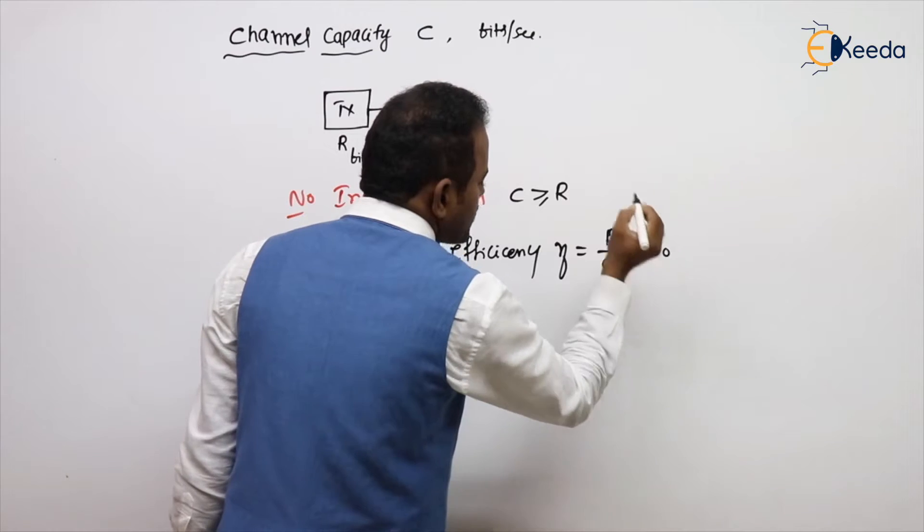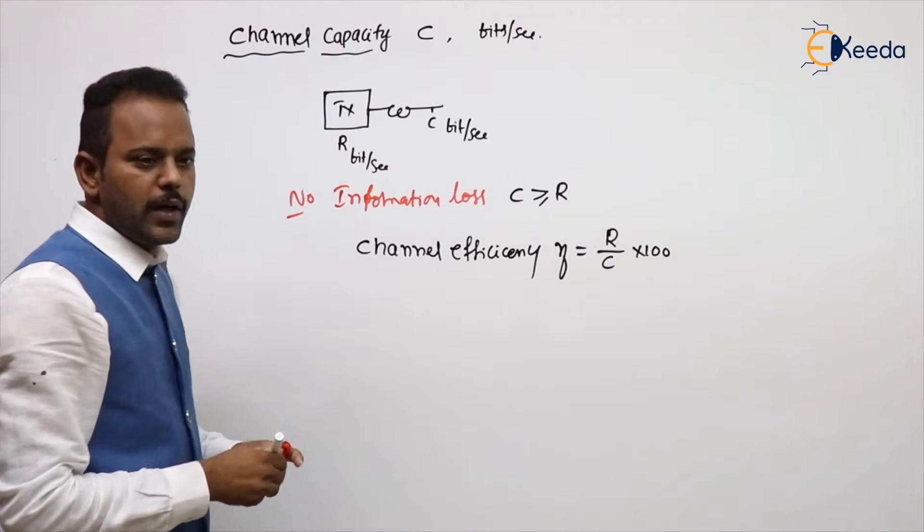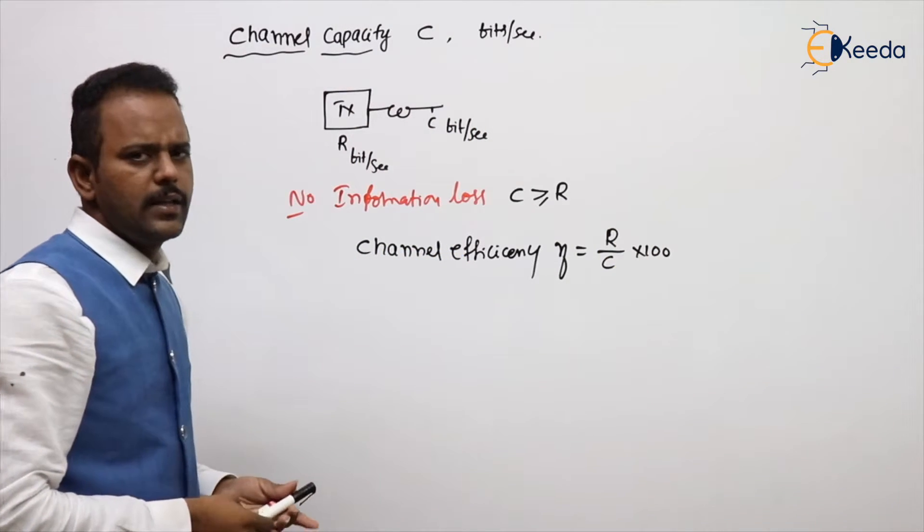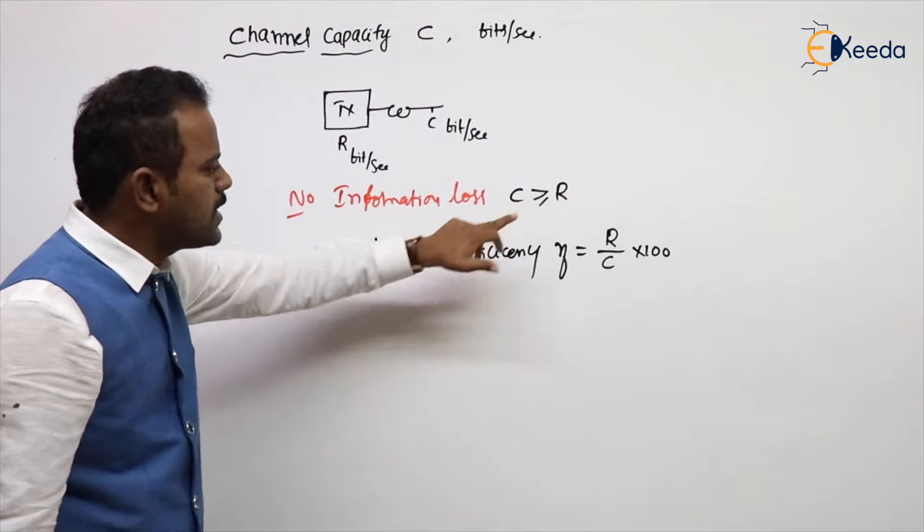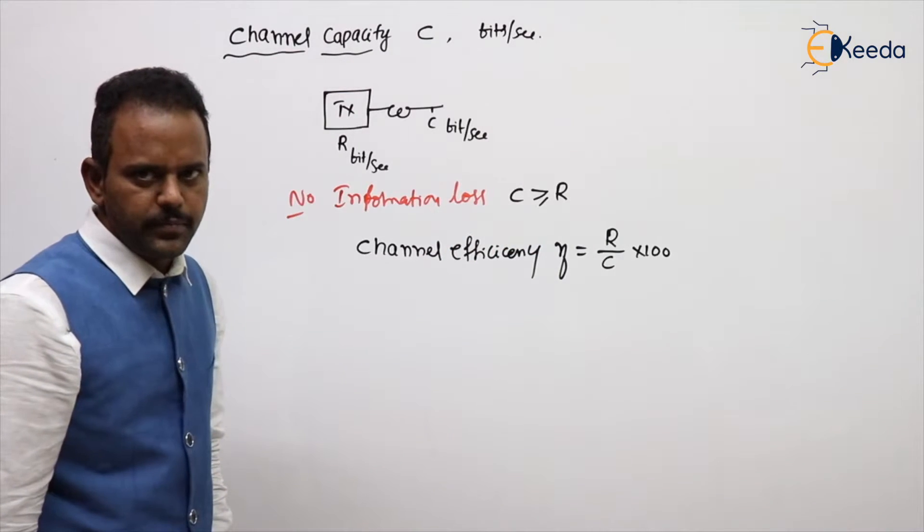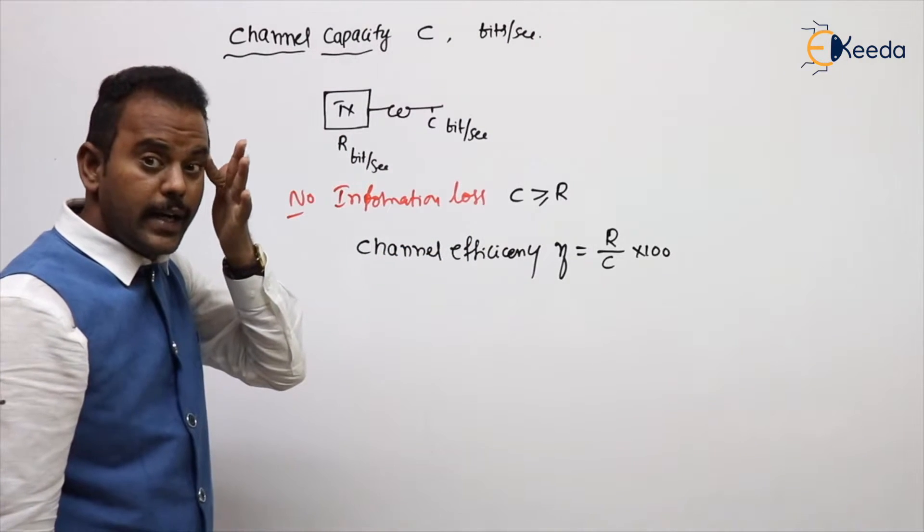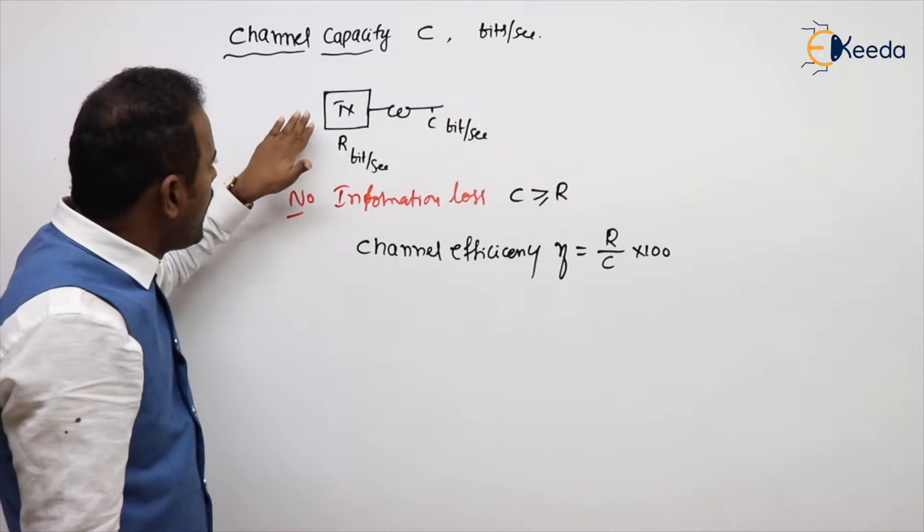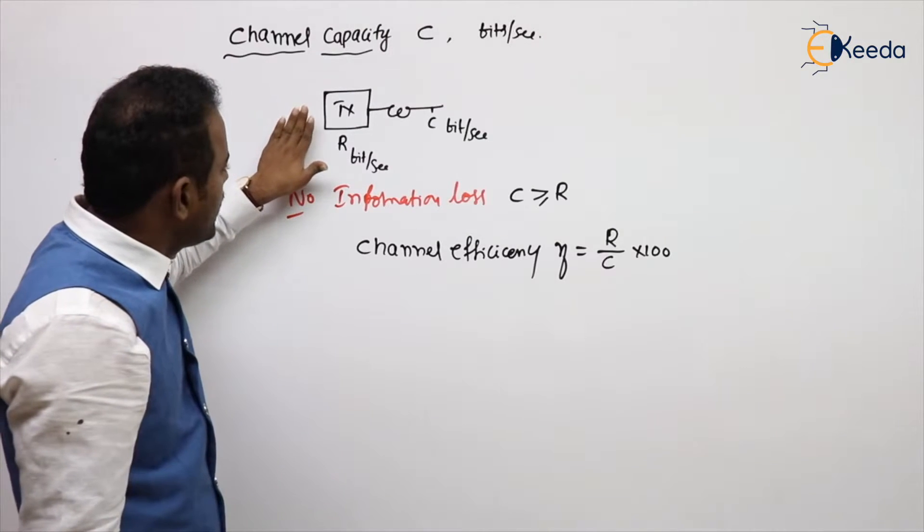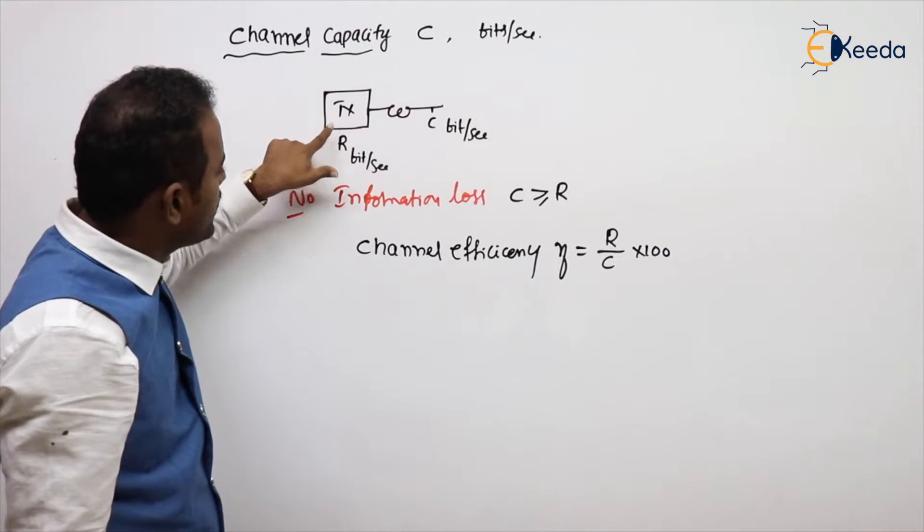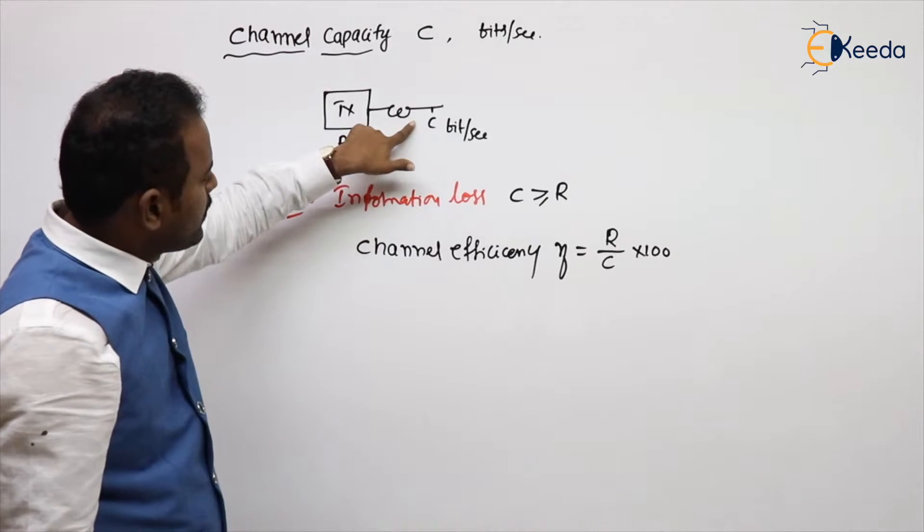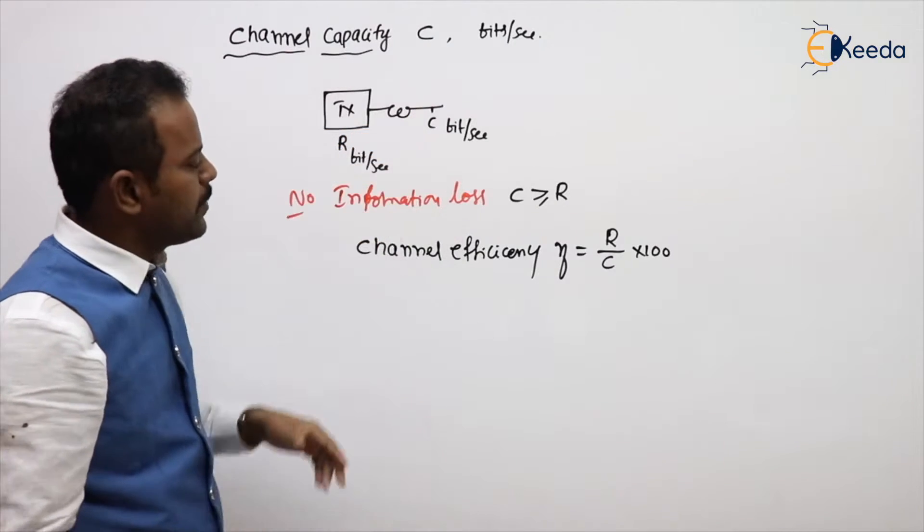You can write percentage if they are asking, into 100. A number of problems are also coming on channel efficiency. Channel efficiency means R by C. And if you don't want any information loss, C should be greater than R. The number of bits generated by transmitter is given by R. The bits carried by the channel is given by C.